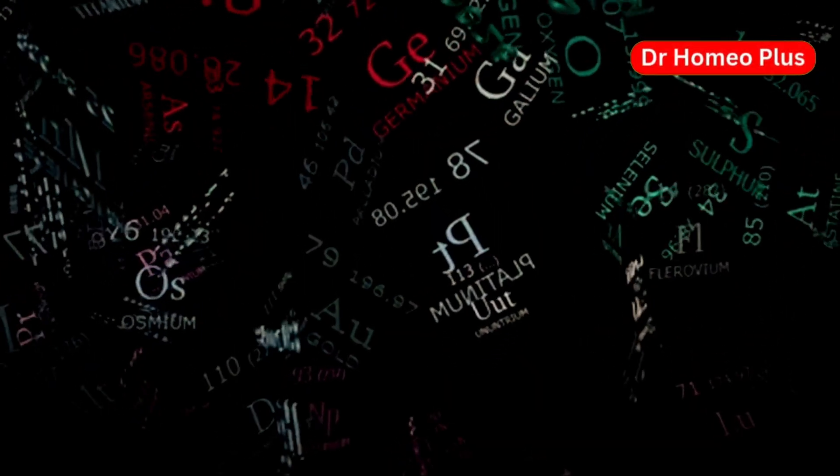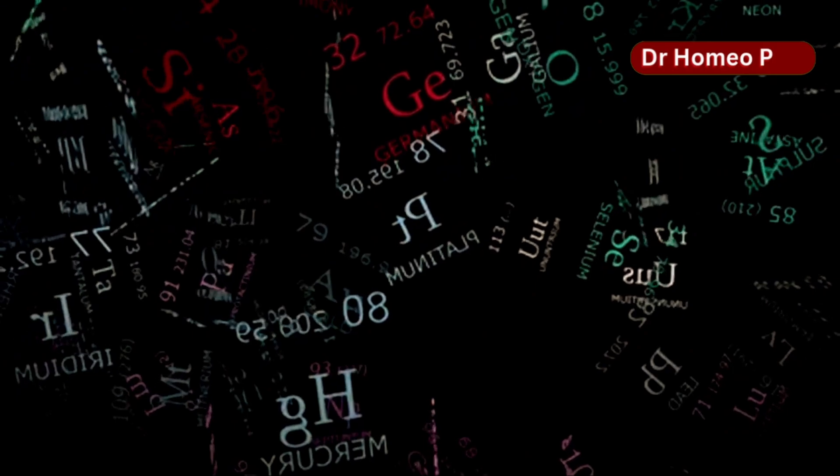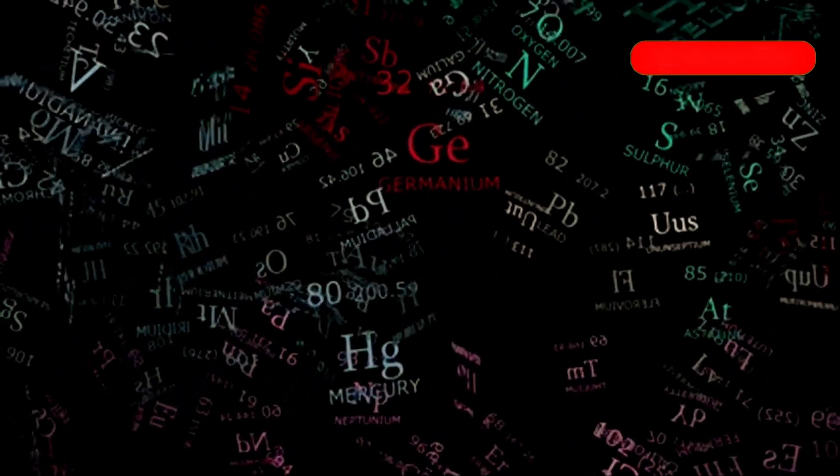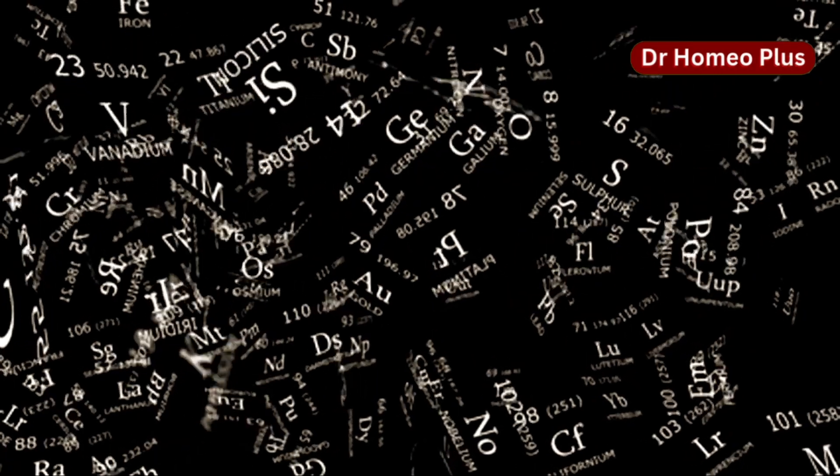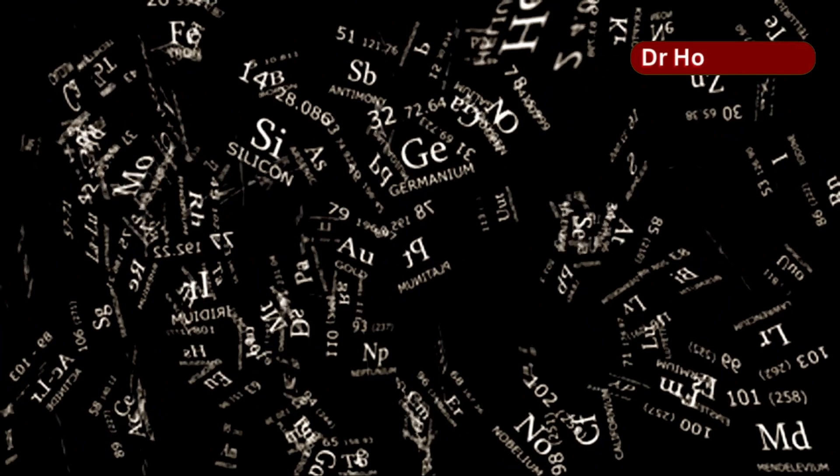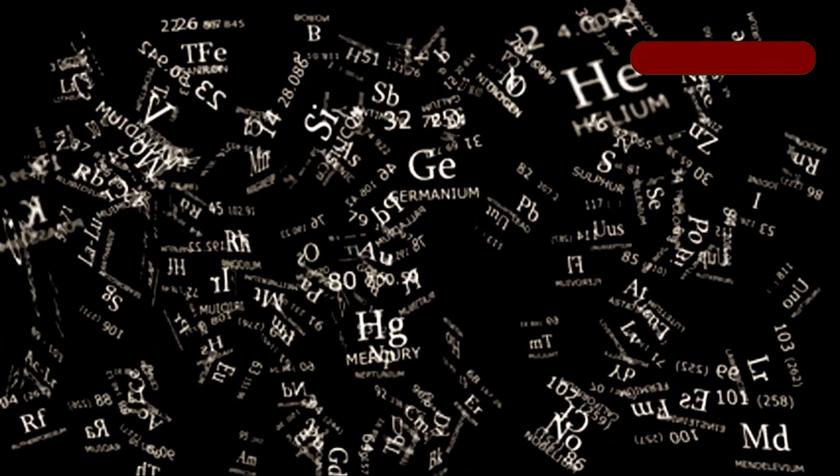The abundance of light elements, such as hydrogen and helium, also supports the theory. These elements were formed in the first few minutes after the Big Bang. And the cosmic microwave background radiation, which is the afterglow of the Big Bang, provides a snapshot of the early universe.